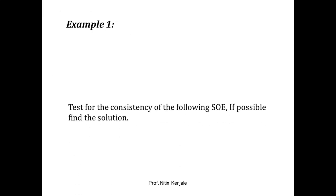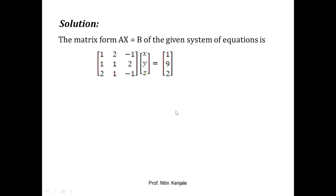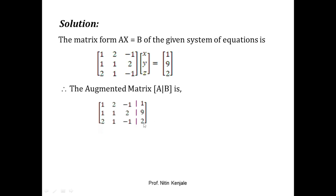Let us understand this with the help of an example. Here we are asked to test the consistency of the system of equations and find the solution if possible. This system has three equations in x, y, z. Following step one, we write the matrix form AX = B. Then we write the corresponding augmented matrix — the first three columns are from matrix A and the last column is matrix B. We perform row transformations: R2 minus R1 and R3 minus 2R1.